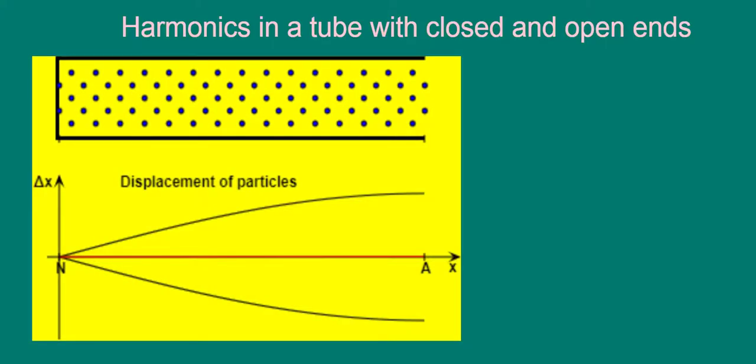We can figure out the frequencies at which stationary waves can form. Let's call the length of the tube L. We know the distance from a node to anti-node corresponds to a quarter of a wavelength.